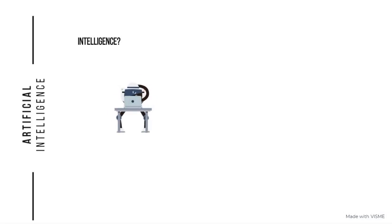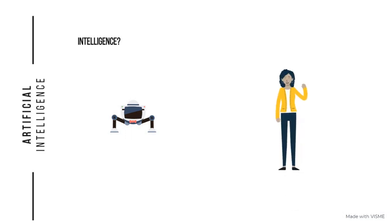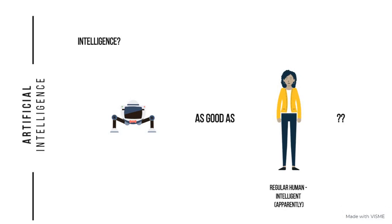Let's say we have a machine and it can do certain tasks, and we want to discern whether it's intelligent or not. What would be a good way of exactly saying that? The accepted convention is basically by comparing it to a human, and humans are apparently very intelligent, so the question is whether this machine is as good as a human being.